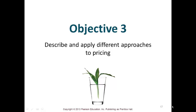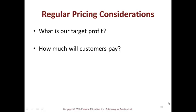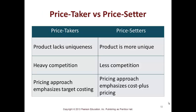Objective three is to describe and apply different approaches to pricing. Regular pricing considerations: what is our target profit, how much will customers pay, and are we a price taker or a price setter? A price taker has a product that lacks uniqueness with heavy competition, and the pricing approach emphasizes target costing — you take what you can get. For example, selling basic jeans where everybody has them.